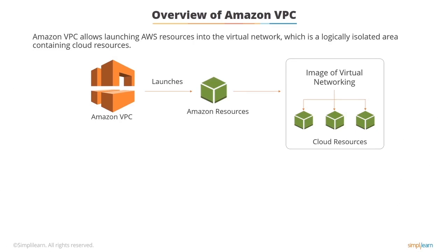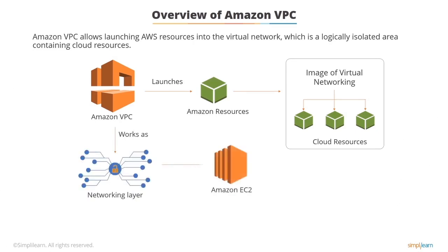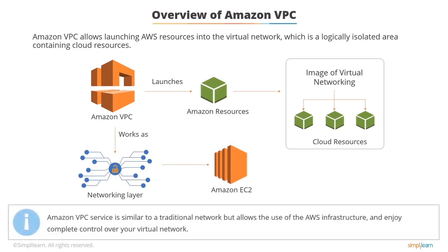For Amazon EC2, Amazon VPC acts as the networking layer. As you pay only for its used resources, there is no additional cost for using the Amazon VPC service. It is similar to a traditional network running in your data center, but allows you to use the scalable AWS infrastructure and enjoy complete control over your virtual network.